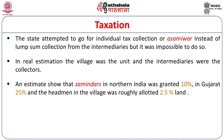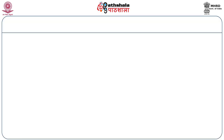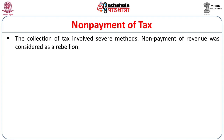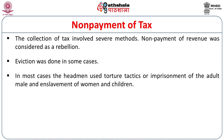Estimates show that zamindars in Northern India were granted 10 percent, in Gujarat 20 percent, and the headman in the village was roughly allotted 2.5 percent of the land as compensation for their collection. The collection of tax involved severe methods. Non-payment of revenue was considered a rebellion. Eviction was also done in some cases.